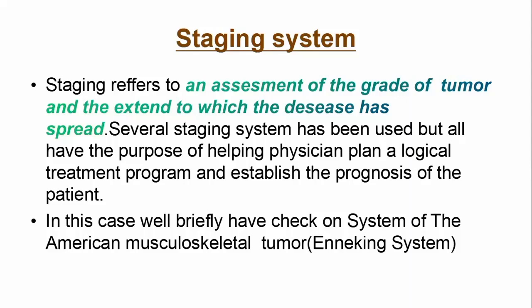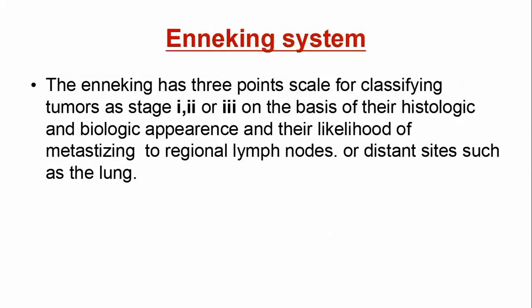Without much ado, let's consider the Enneking staging system. Enneking has a three-point scale for classifying tumors, and specifically bone tumors. These are Stage 1, 2, and 3, denoted with Roman numerals, on the basis of the histological and biological appearance and the likelihood of metastasizing to regional lymph nodes or distant sites such as the lung.